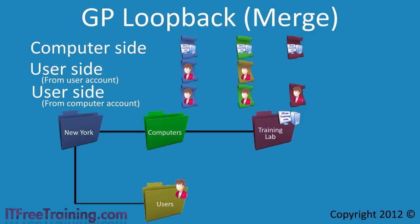To understand how merge mode works, it helps to look at replace mode first. In replace mode, the computer side is applied and then the user side is applied based on the location of the computer account in Active Directory. What is different with merge mode is that the user side is applied in between these two steps. Compared to normal group policy processing, the first two steps are the same for both: computer settings are applied based on the computer account location, then user side settings are applied based on the user account location. Merge mode adds a third step by also applying the user side of group policy based on the location of the computer account, allowing the administrator to add to or replace any existing user side group policy settings.